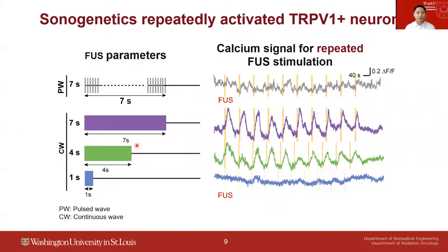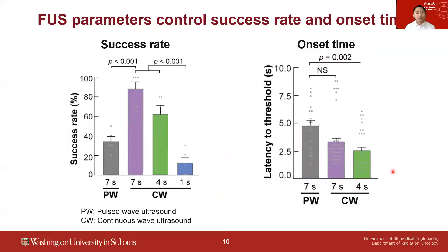We then evaluated different focused ultrasound stimulation parameters, including pulsed wave (PW) and continuous wave (CW) with different stimulation durations. By optimizing the ultrasound parameters, sonogenetics can repeatedly activate neurons overexpressing TRPV1. The success rate was dependent on the ultrasound parameters used. Continuous wave with 7-second stimulation duration can achieve a neuron activation success rate as high as 88%.